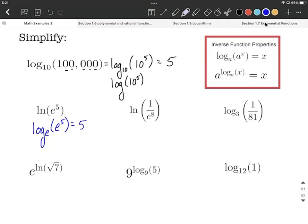On the next one, in the middle there, natural log of one over e to the eighth power, I'm going to work on rewriting this. I don't want it to be one over e to the eighth power. I'm going to use an exponent rule and move the e to the eighth power up to the numerator, but we're going to have to make this a negative exponent.